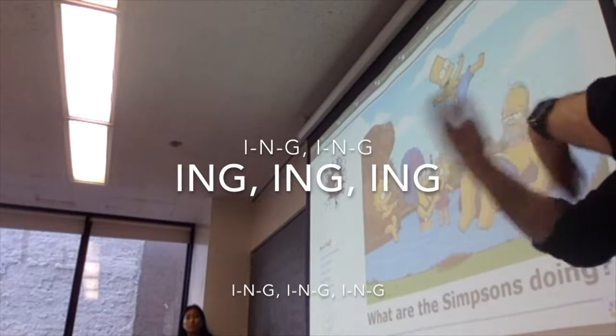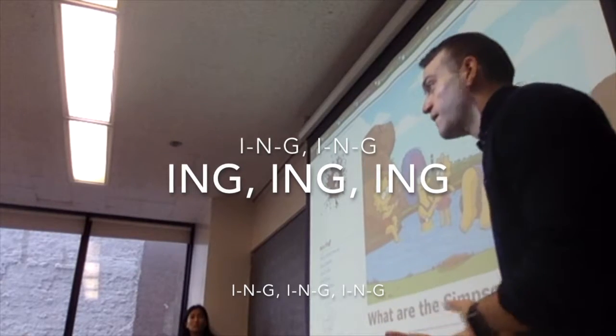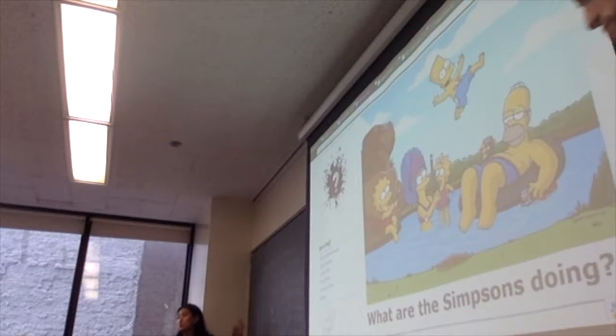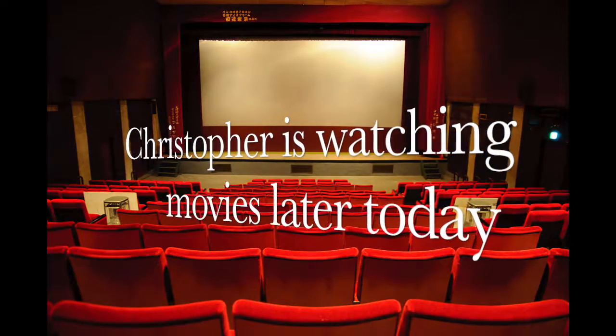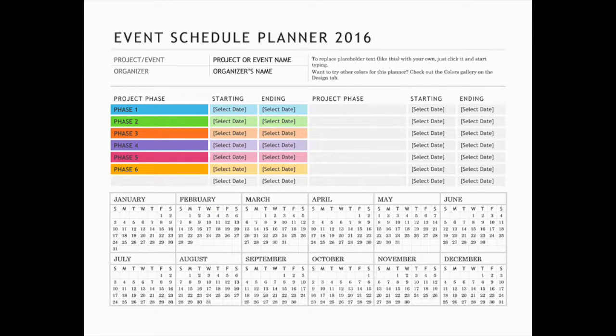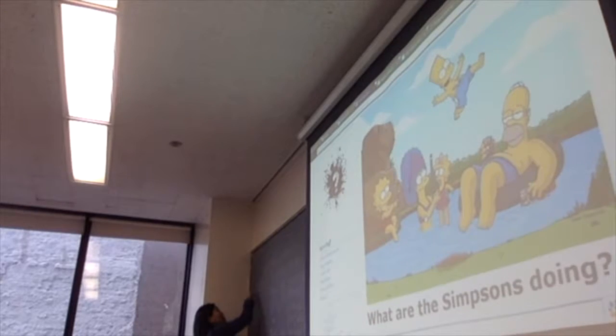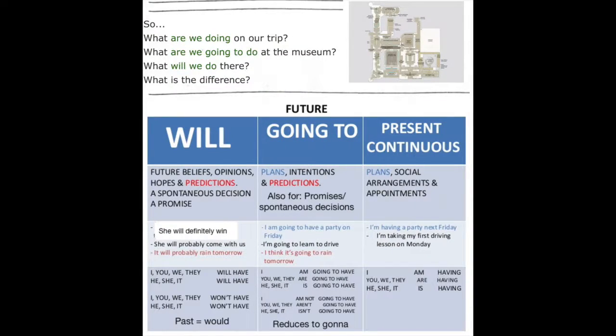You can also use this to talk about the future, actually. So if you have a plan, you have a definite plan, you can also use this to talk about the future. What are you doing later today, Christopher? I'm watching some movies. So Christopher is watching movies later today. That's his plan. He has definite plans. We use this all the time. At the end of class, we're going to the computer lab. Are we going right now? No, we're going to the computer lab. That's the next thing we're going to do. So continuous means what's happening now or what's happening in the future and what's going on into the future.